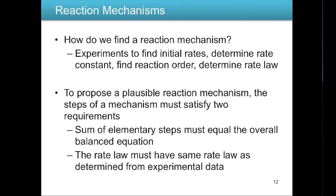Finding reaction mechanisms requires experimental work — measuring intermediates and components of different steps — so it is not easy. When a mechanism is proposed, it must satisfy the two criteria: the elementary steps must sum to the overall reaction, and the rate law must match the rate determining step.